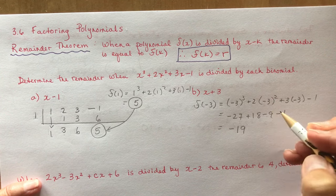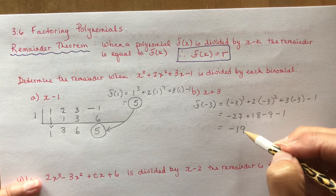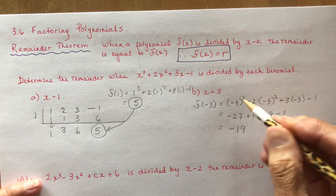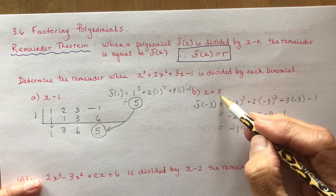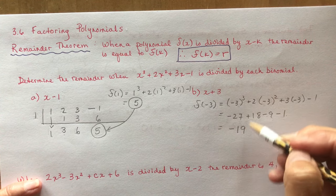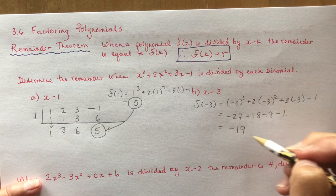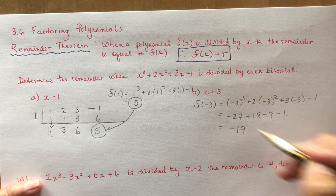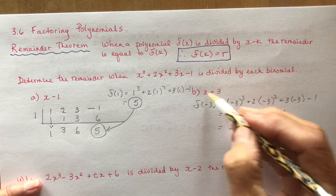So I have minus 10, minus 37 plus 18 is minus 19. So if you're asked what is the remainder when it's divided by this, do not use long division — just use the remainder theorem. Bang bang bang, there you go: f at minus 3.